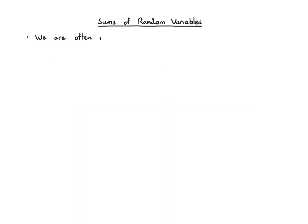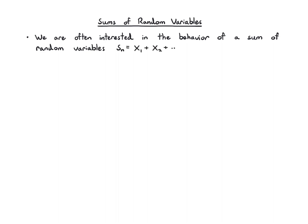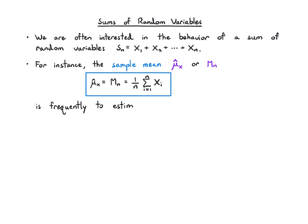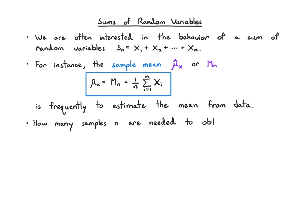In many scenarios, we're often interested in the behavior of a sum of random variables, which is also a random variable. We're going to denote that by S_n, which is the sum of x1 up to xn. For instance, maybe we're computing the sample mean, which we write as mu-hat of x, or m_n — that's just the average of random variables x1 up to xn. The reason we use that is just to estimate the mean from data. So how many samples or how much data do we need to get a good estimate? We'll say a bit more later about what this means precisely.